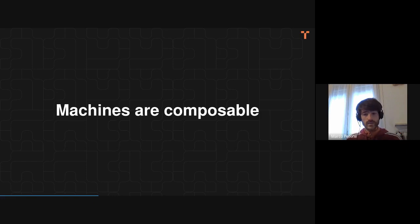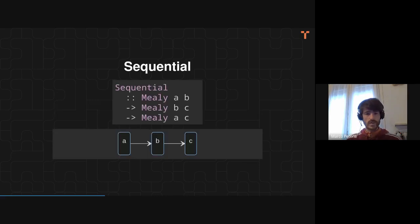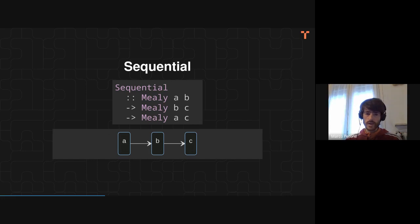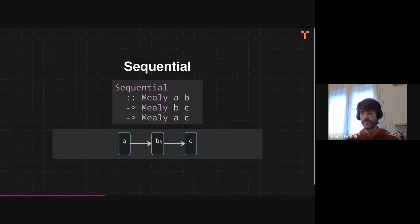The first cool thing about state machines is that they are extremely composable. For example, we can compose them sequentially. If we have a Mealy machine which consumes inputs of type A and emits outputs of type B, and another one receiving inputs of type B and emitting outputs of type C, we can compose them both — executing the first one and then passing its outputs to the second one — to get basically a bigger Mealy machine which consumes the input of the first and emits the output of the second.